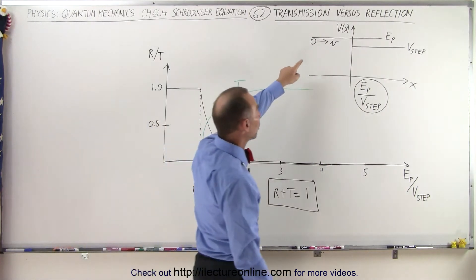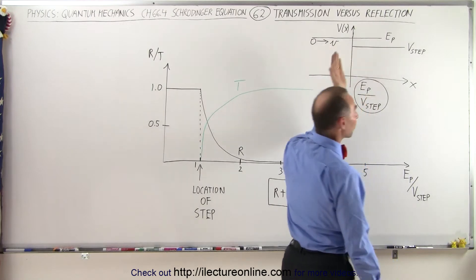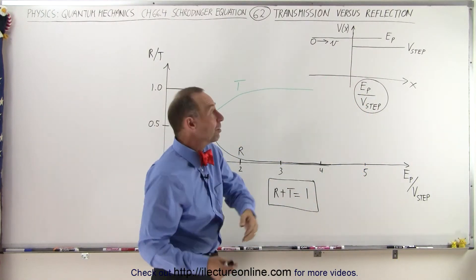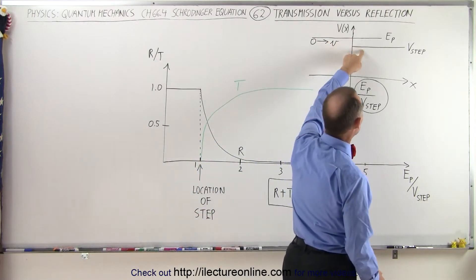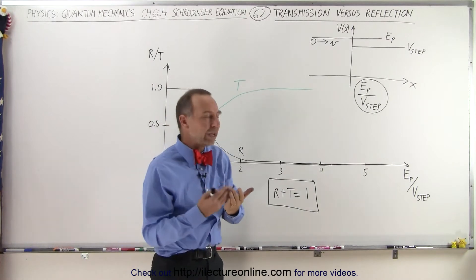Let's say that a small particle with a certain amount of energy is incident upon either a barrier or a potential step. The situation can be where the energy of the particle is greater than the potential step or the energy of the particle is less.